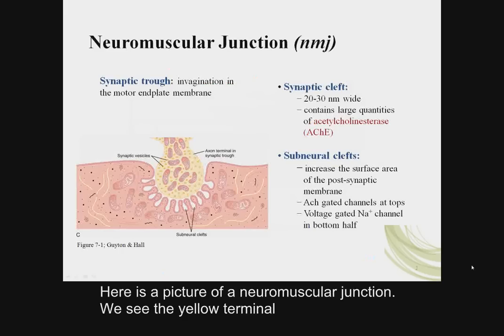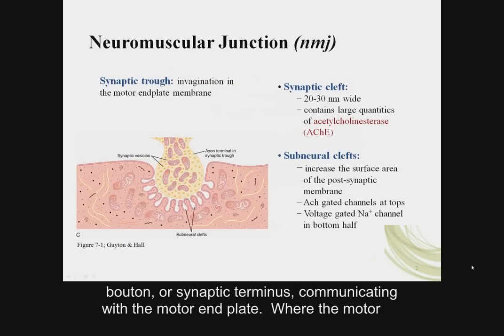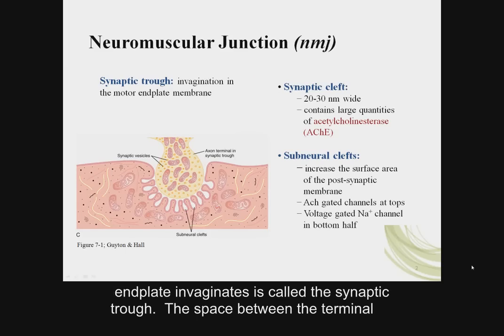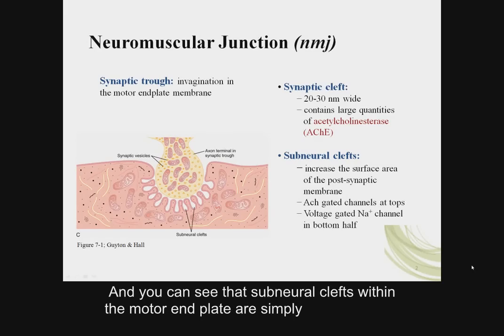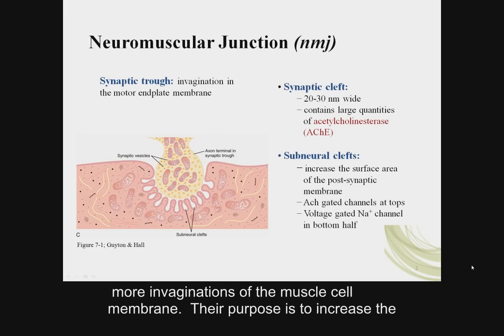Here is a picture of a neuromuscular junction. We see the yellow terminal bouton, or synaptic terminus, communicating with the motor end plate. Where the motor end plate invaginates is called the synaptic trough. The space between the terminal bouton of the neuron and the muscle cell membrane is called the synaptic cleft. Subneural clefts within the motor end plate are simply more invaginations of the muscle cell membrane.